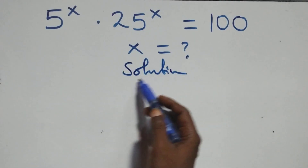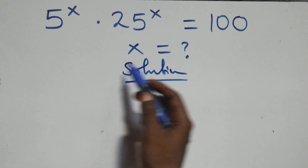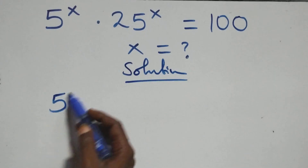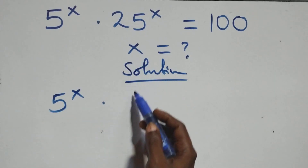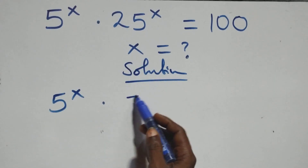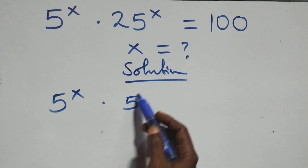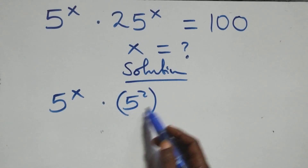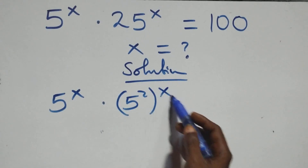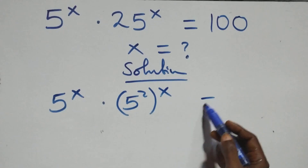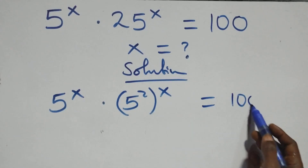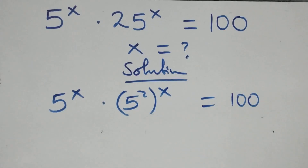From what we have here, we can write this as 5 raised to power x, times 25 — which can be written as 5 squared — raised to power x, then equals 100 on this side.